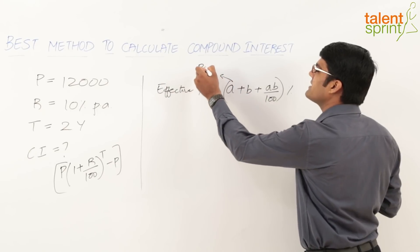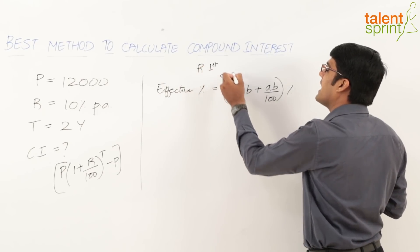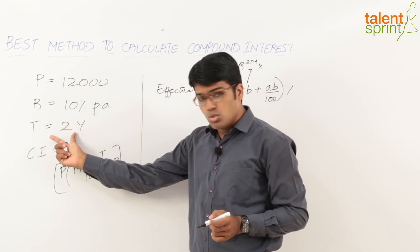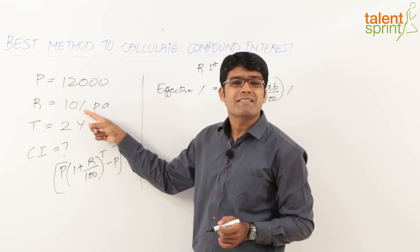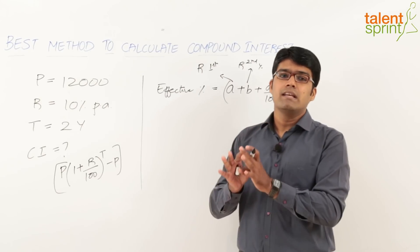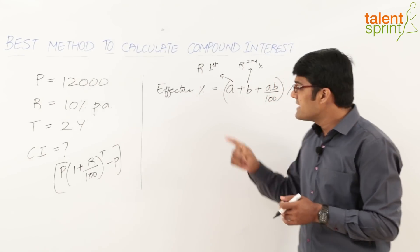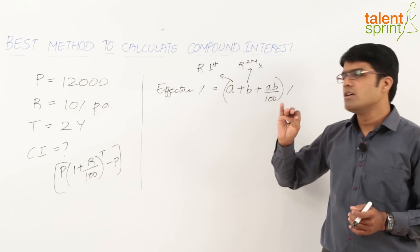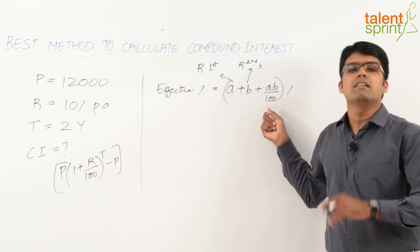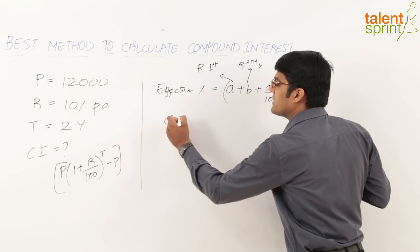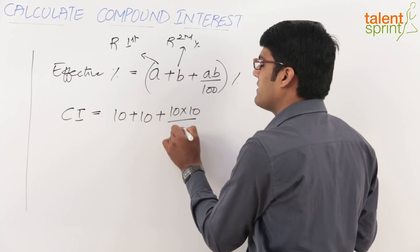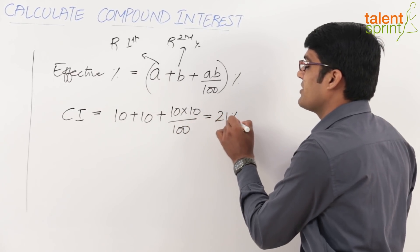And b denotes the rate of interest for the second year. In the given question, the time period is 2 years and the rate is 10% per annum — so for the first year it is 10% and the second year it is also 10%, meaning a and b are both equal to 10%. Substituting, the effective percentage equals 10 + 10 + (10×10)/100 = 20 + 1 = 21%.